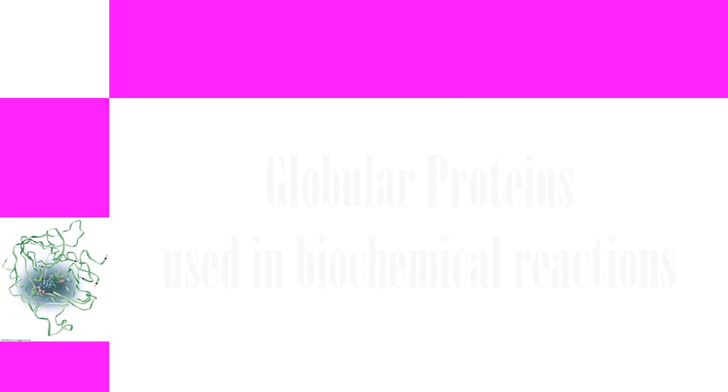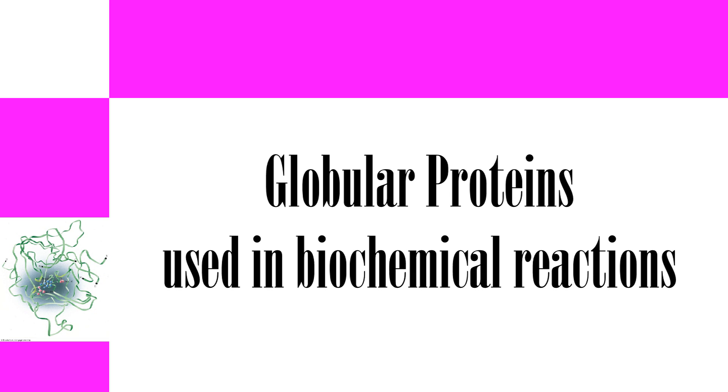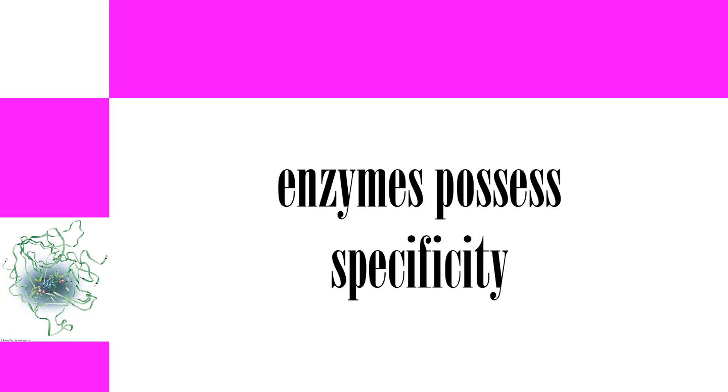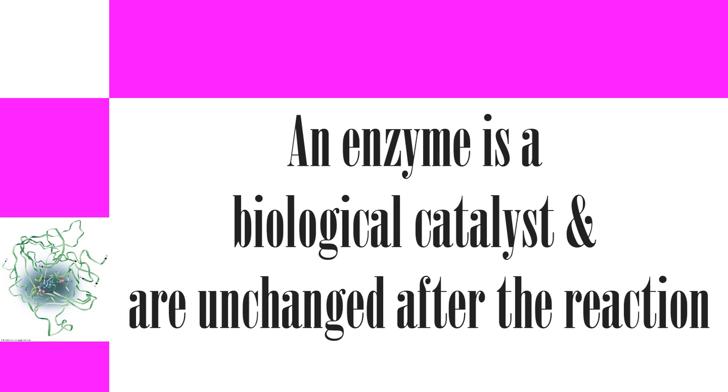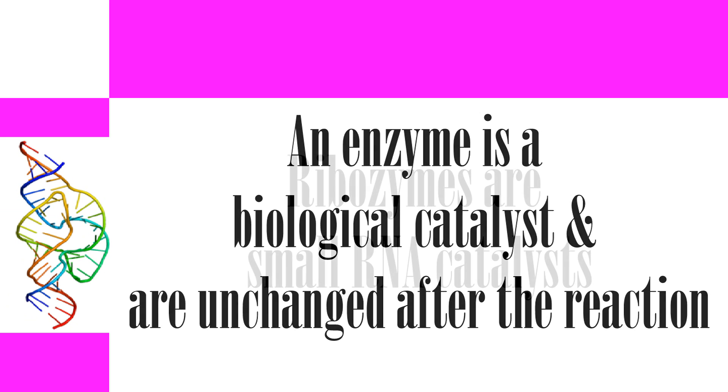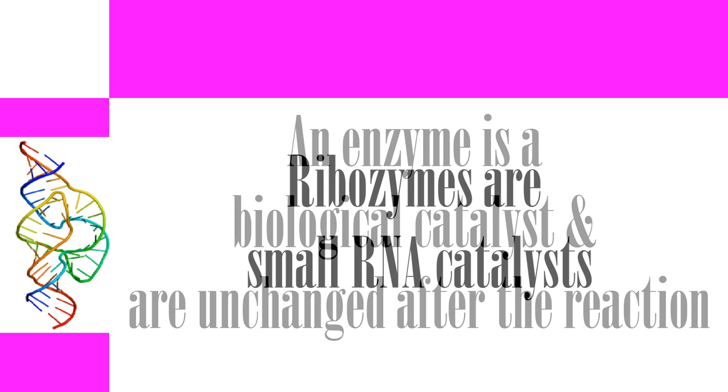Enzymes are mostly going to be globular proteins, and they're going to be used in all reactions in the body. Most of them are very specific. Some of them are fairly specific, meaning that they're going to catalyze the reactions of a very specific substrate. So a definition for an enzyme would be a biological catalyst. There are other catalysts that exist, but these are going to be the globular proteins that are in the body, speeding up reactions without themselves being changed. It's just a transient change. There is an exception to the globular protein rule of enzymes.